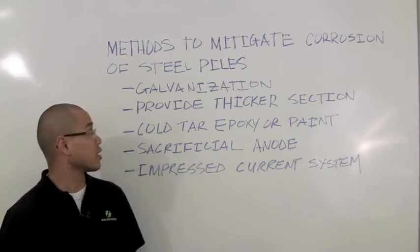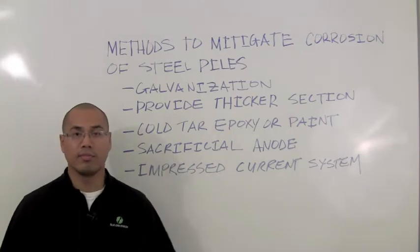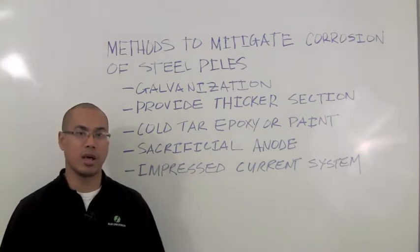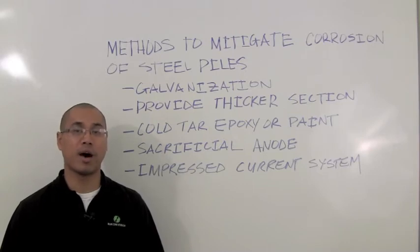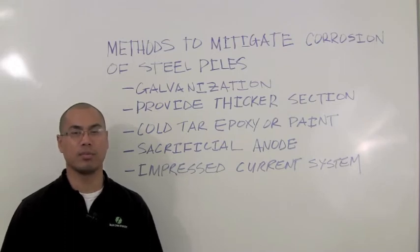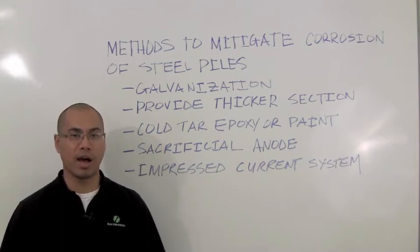The first method I'd like to speak of is galvanization. This method is typically done per ASTM A123 and entails hot dipping the steel piles into a molten bath of zinc, which will yield approximately 4 mils of material on all surfaces of the piles.